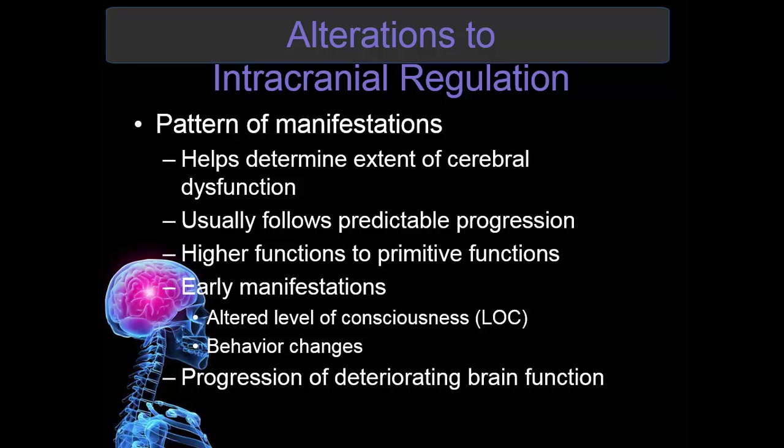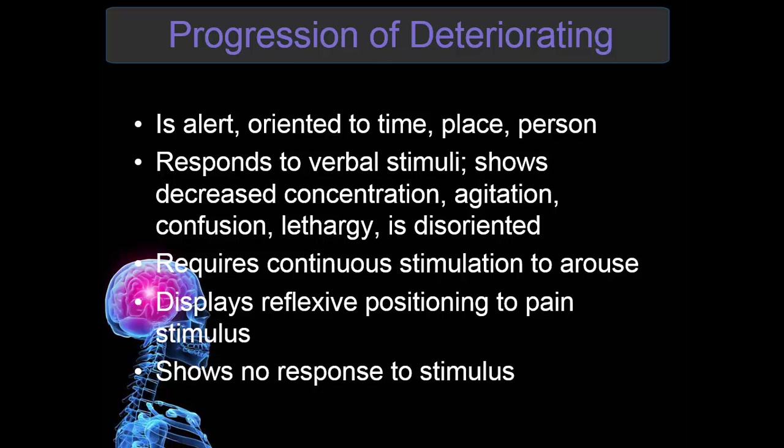Alterations to intracranial regulation usually occur due to illness or injury. You need to assess the pattern of manifestations to help determine the extent of cerebral dysfunction. It usually follows a predictable progression — higher functions are impaired initially, progressing to primitive functions being impaired later on. Early manifestations are altered level of consciousness and behavioral changes. The progression of deteriorating brain function will worsen the longer this goes on.